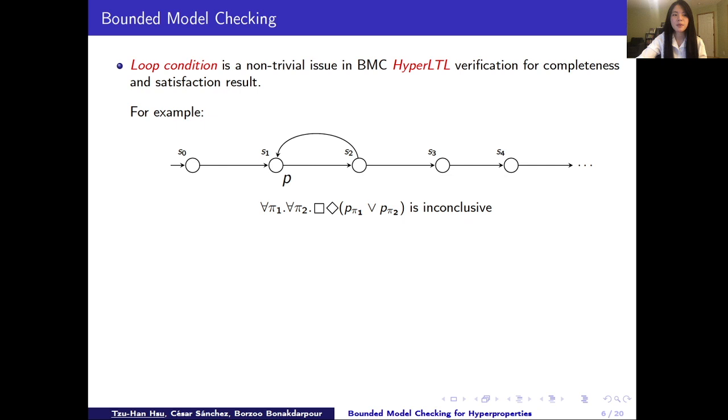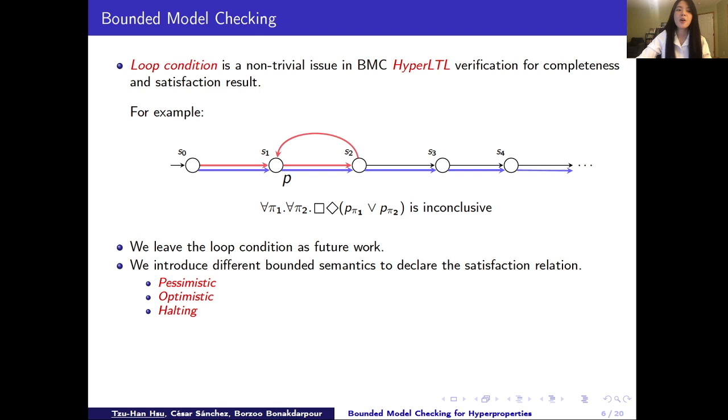This is difficult because, for example, we might find this red path here who is taking the loop back from S2 to S1. Also, we might find another blue path here who decides not to take the loop. So here, you can see when we have more and more loops in our model, the verification problem suddenly becomes more and more complicated. In this work, we are not able to address this part yet. However, we still want to build this satisfaction relation in order to verify hyperLTL using bounded model checking.